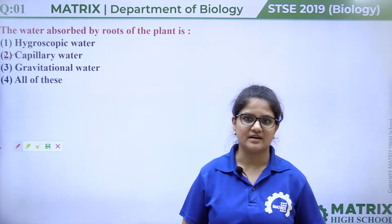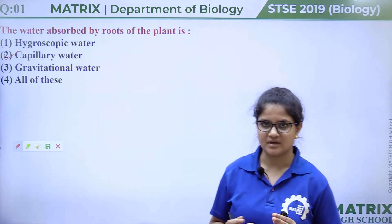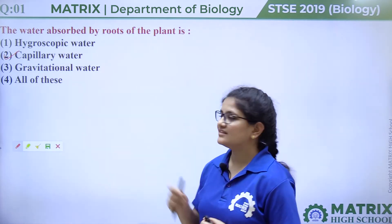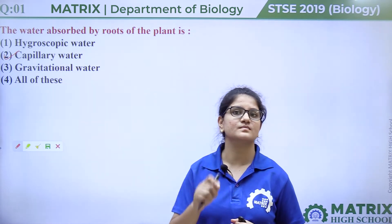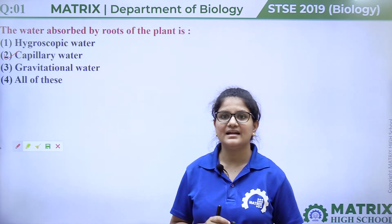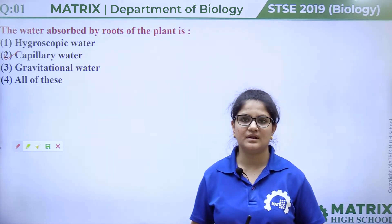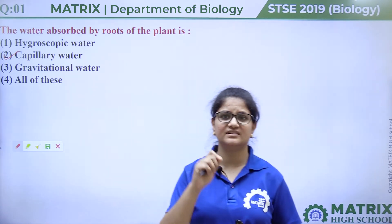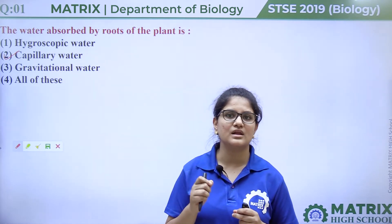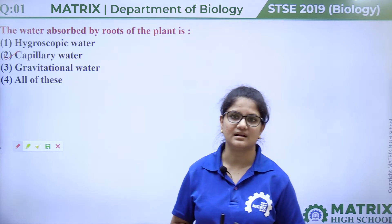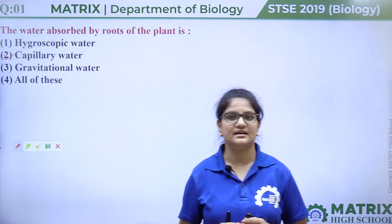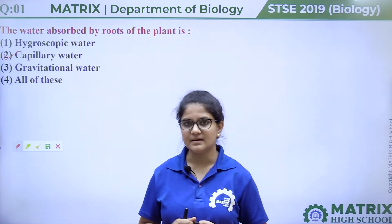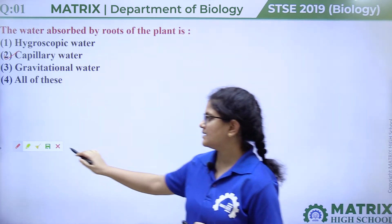There are two types of particles in soil: macroscopic and microscopic. Macroscopic particles are larger in size. Gravitational water gets filled in those macroscopic pores and the rest goes down to the water table because of gravity. Hygroscopic water is present as a thin film tightly bound around soil particles. Capillary water is present in the microscopic pores and is utilized by plants. So the answer is capillary water.